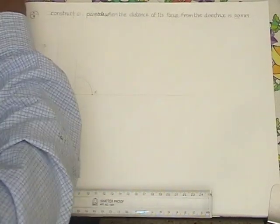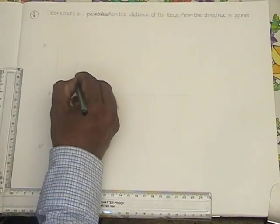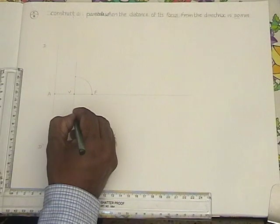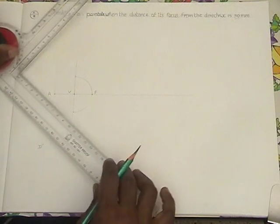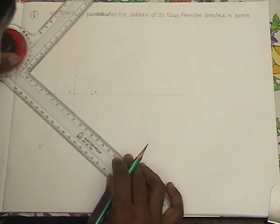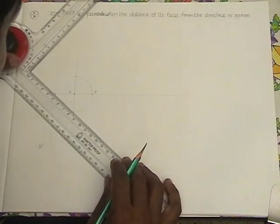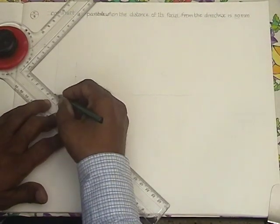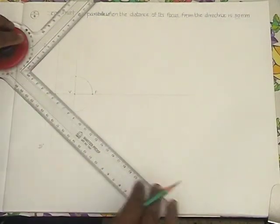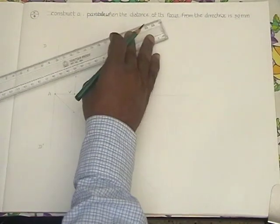So you get two points, one point here and another point here. Now, make use of the router, focus these points and draw the directing line, line number one.